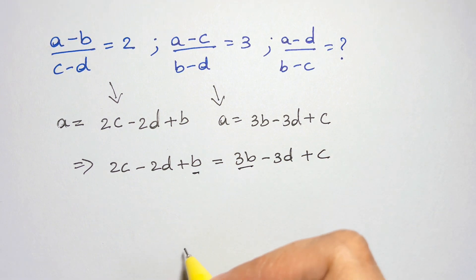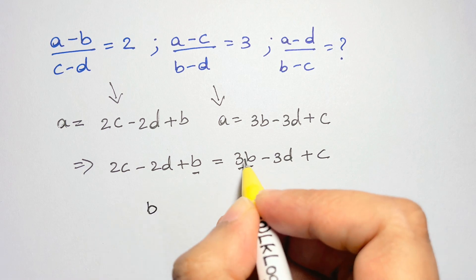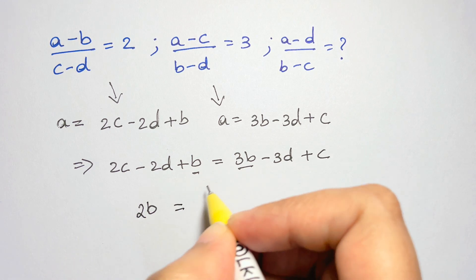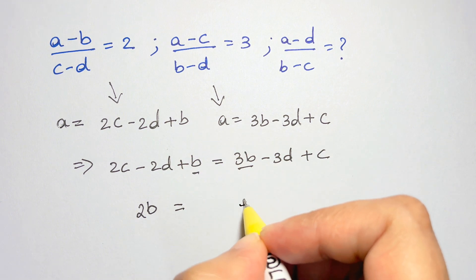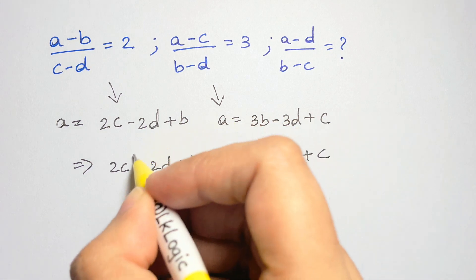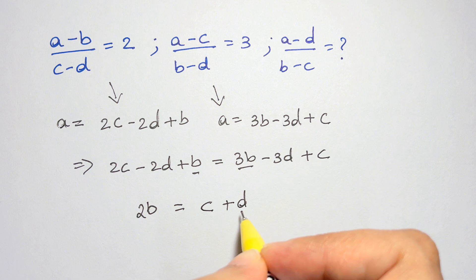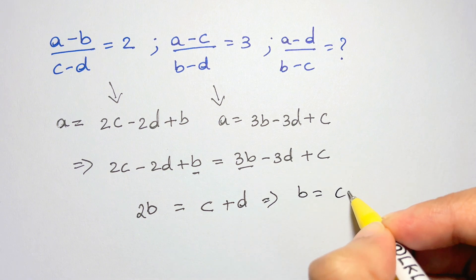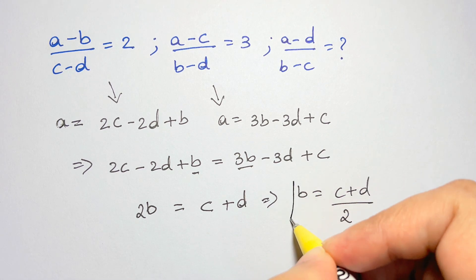Now let me solve for b. Bringing 3b to this side, I have 3b minus b which is 2b, equal to 3d minus 2d which is d, and 2c minus c which is c. So 2b is equal to c plus d, therefore b is equal to (c plus d) over 2.